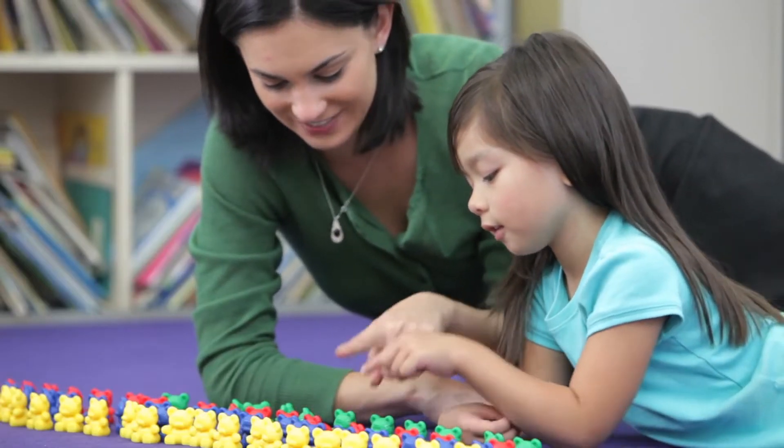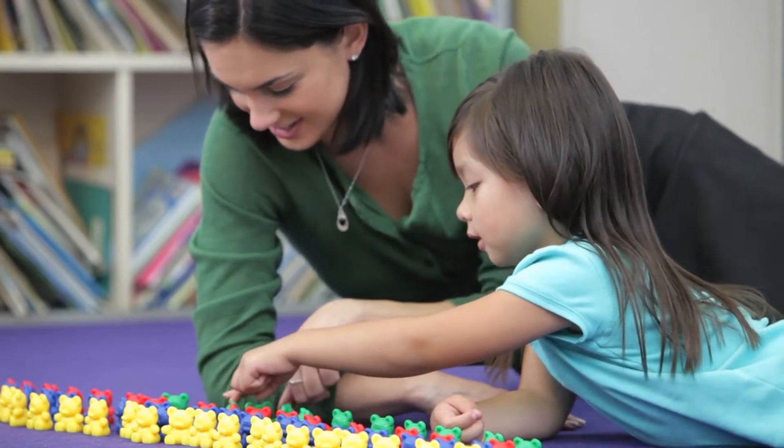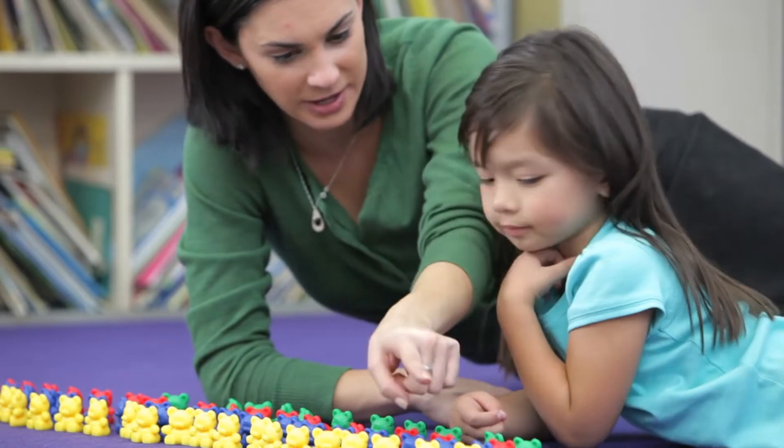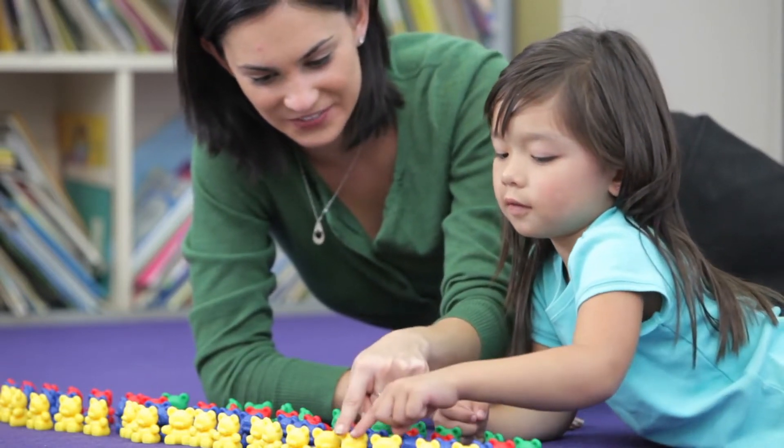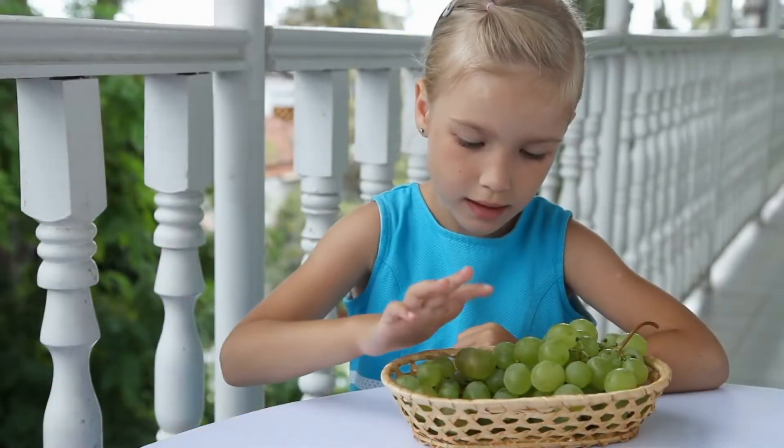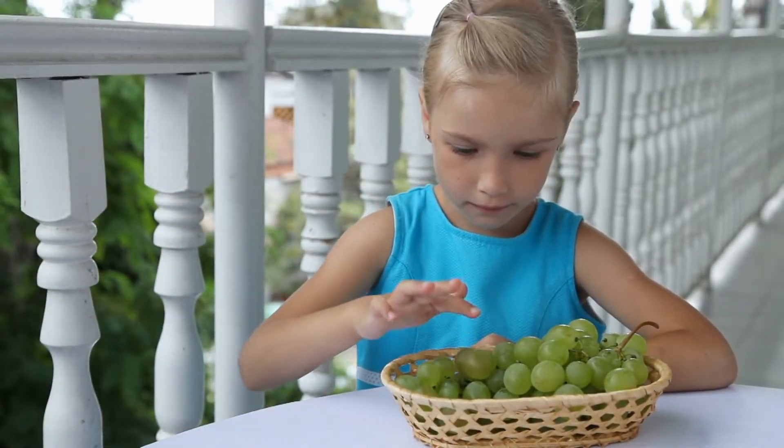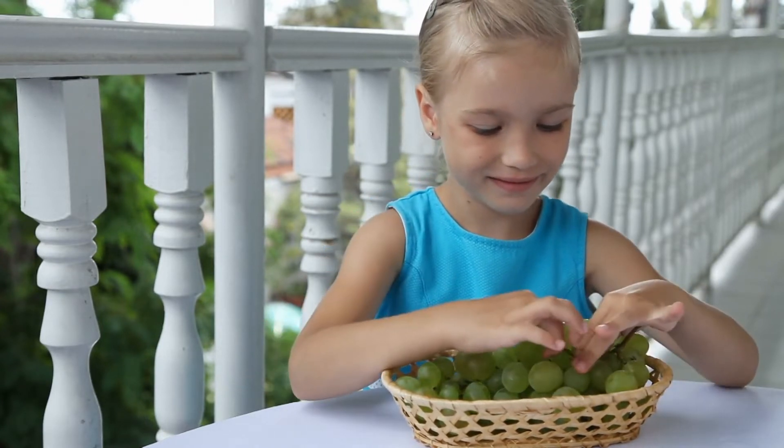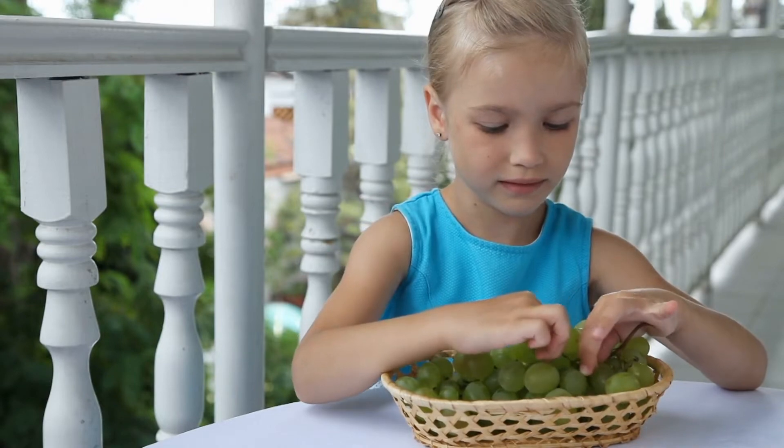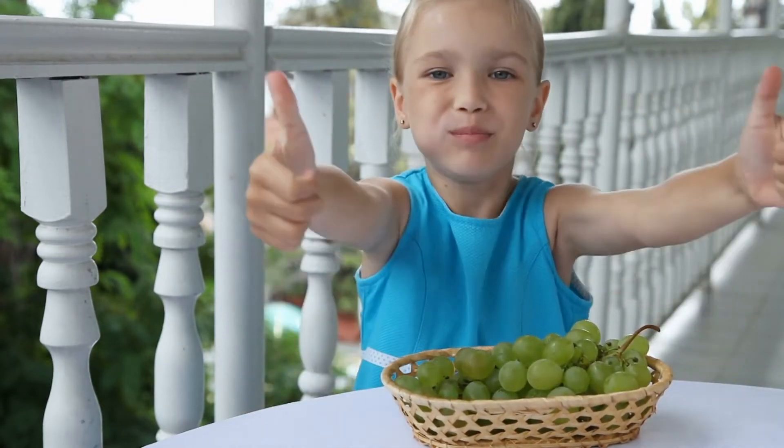We know that your child may be able to count to a hundred or higher, but there is a difference between counting and truly understanding the connection between the numeral and the quantity it represents. Today we are going to share ways you can support your child's natural development from counting objects one by one to instantly recognizing a small group of dots as a number.